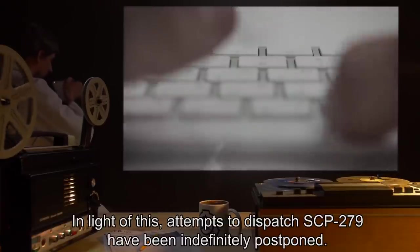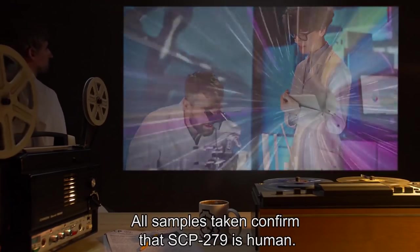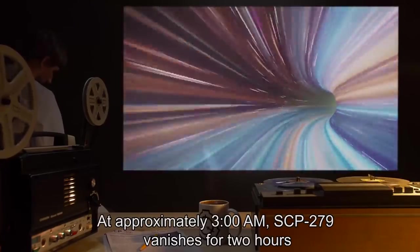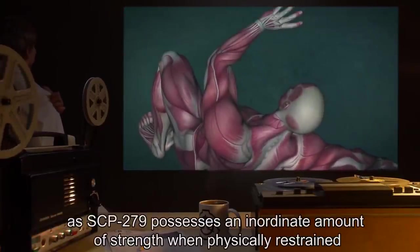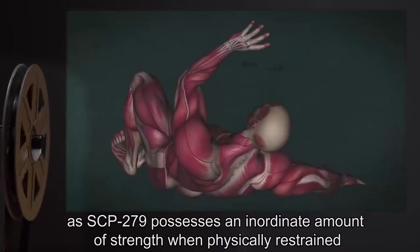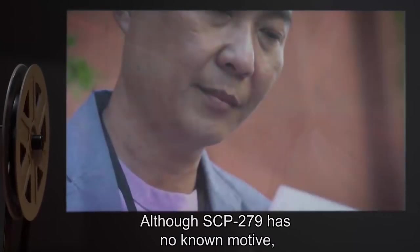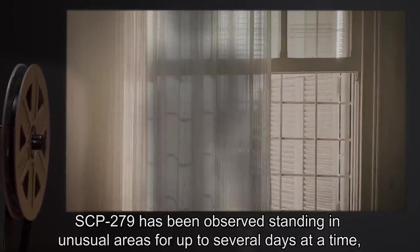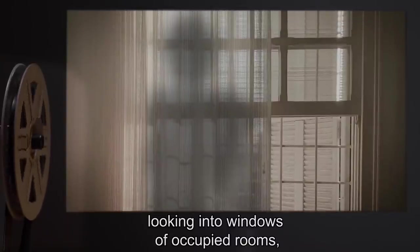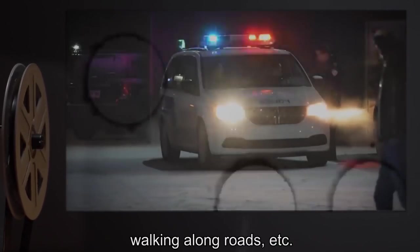In light of this, attempts to dispatch SCP-279 have been indefinitely postponed. All samples taken confirm that SCP-279 is human. At approximately 3 a.m., SCP-279 vanishes for two hours and returns in its original state at another location in [REDACTED]. Containment or restraint is impossible, as SCP-279 possesses an inordinate amount of strength when physically restrained and has utilized its ability to spontaneously reappear in a different location when indirectly restrained. Although SCP-279 has no known motive, it does not have a known history of violent behavior. SCP-279 has been observed standing in unusual areas for up to several days at a time, looking into windows of occupied rooms, walking in a circle roughly two meters in diameter for several hours, [DATA EXPUNGED], entering shops, walking along roads, etc.